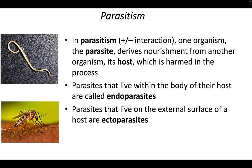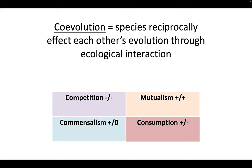Looking at all of these interactions, one thing they all lead to is co-evolution. When one species affects the other's fitness, it will lead to the other species evolving. We see this with all four types of interactions.